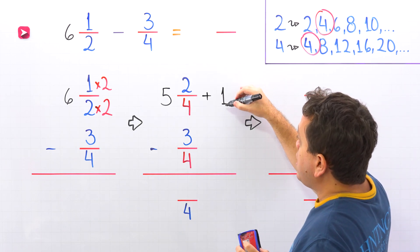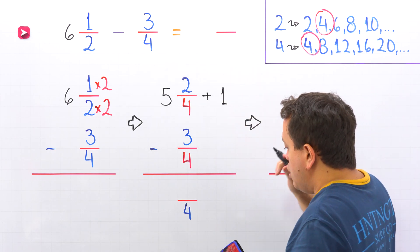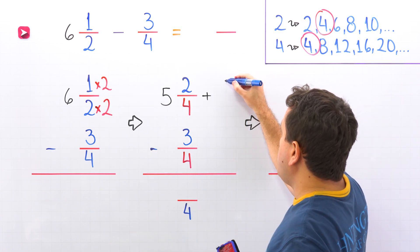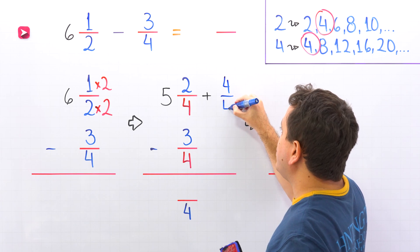As you can see, we have written 1 in the column of the fractions. Now, we're going to rewrite 1 as a fraction. And that fraction will be 4/4.